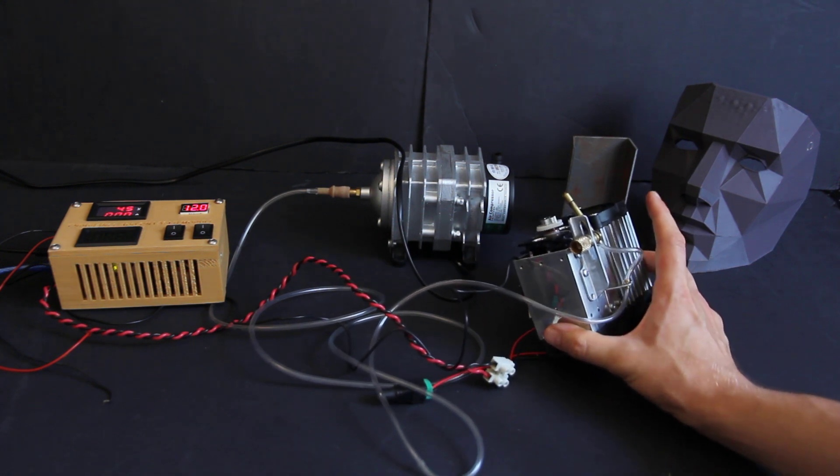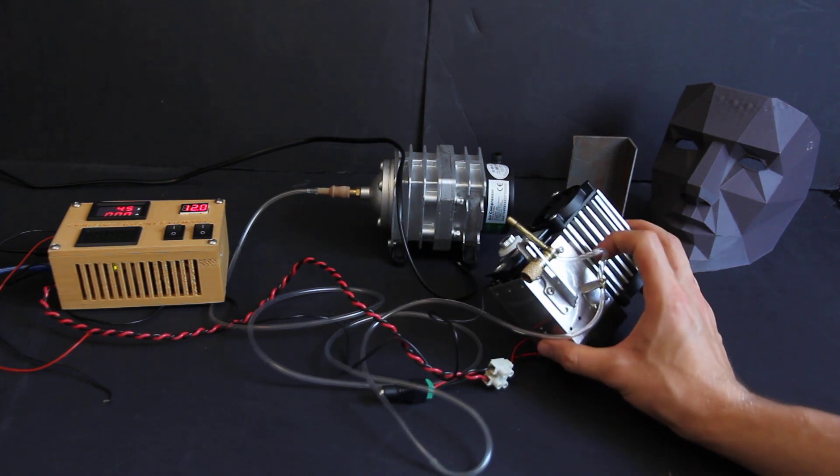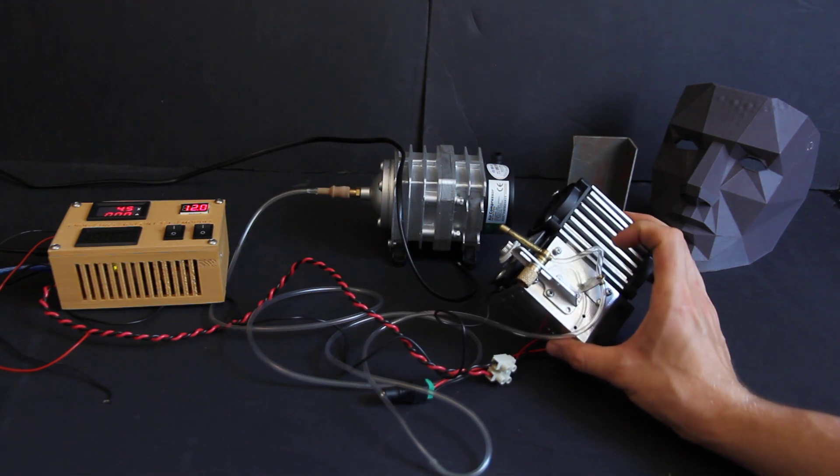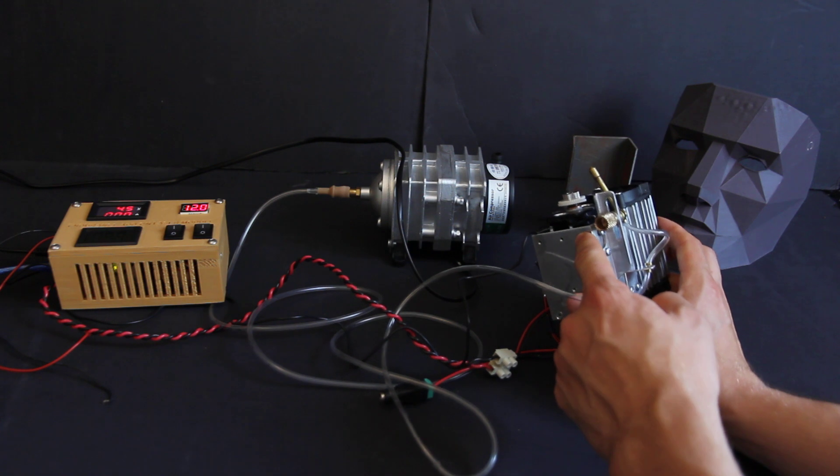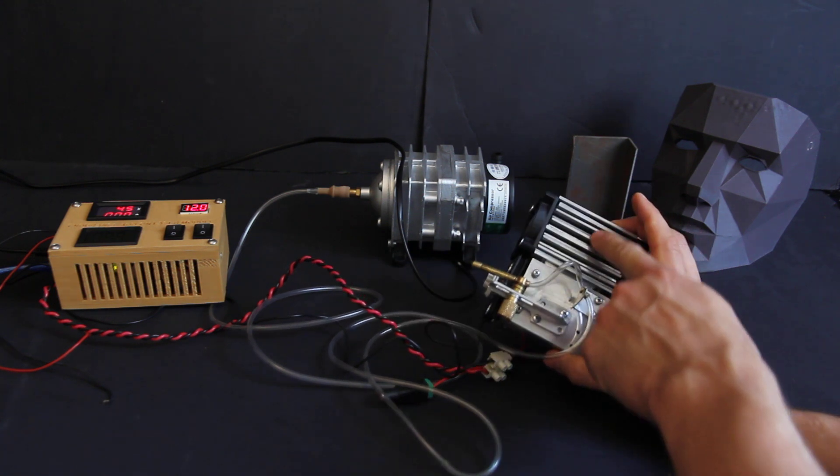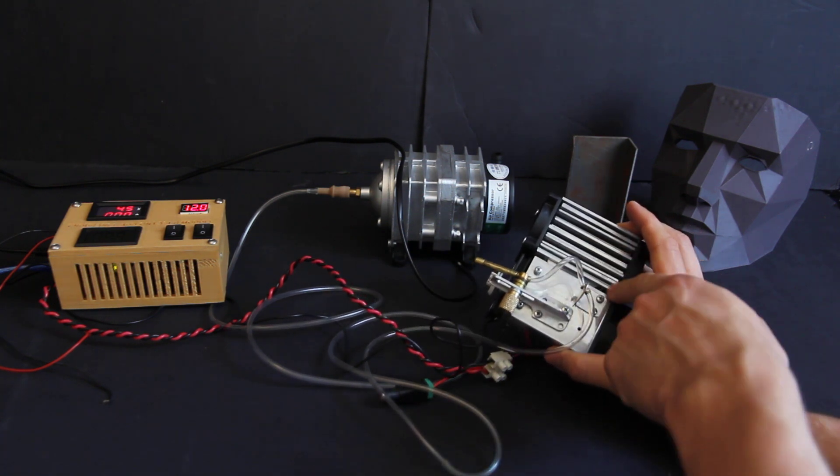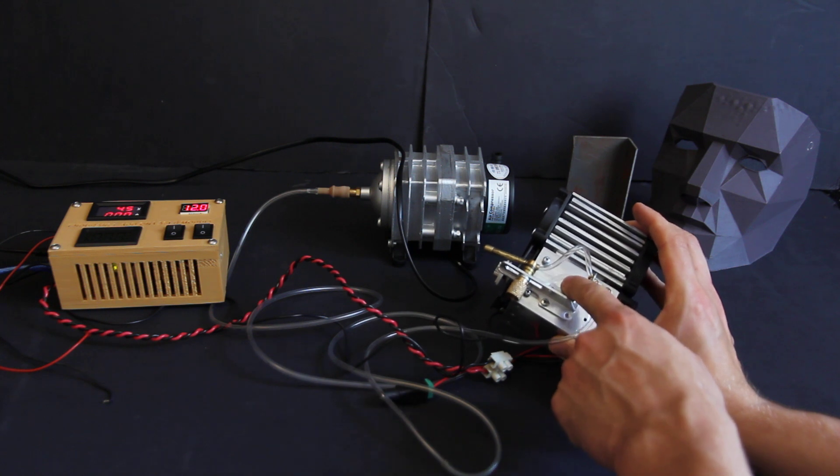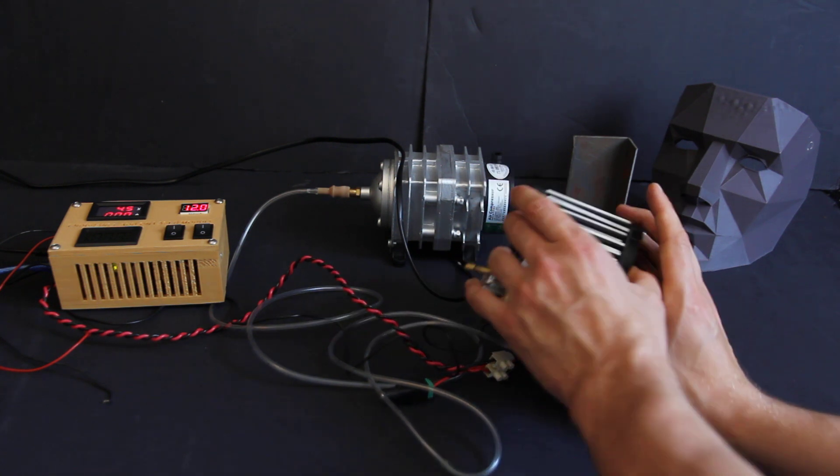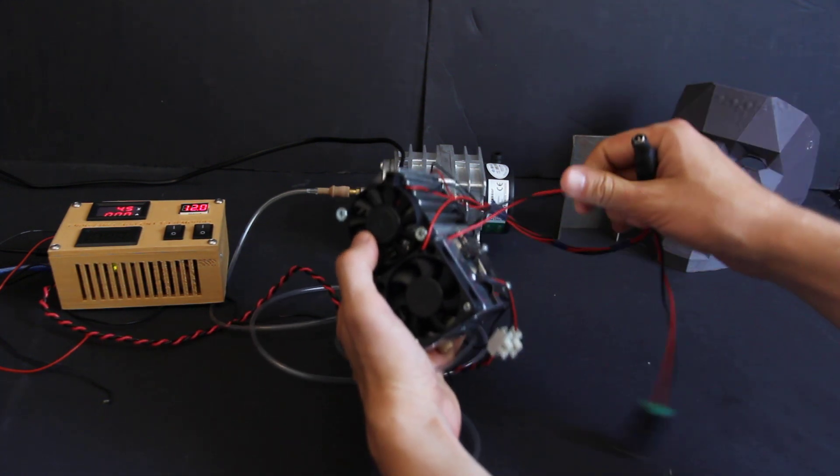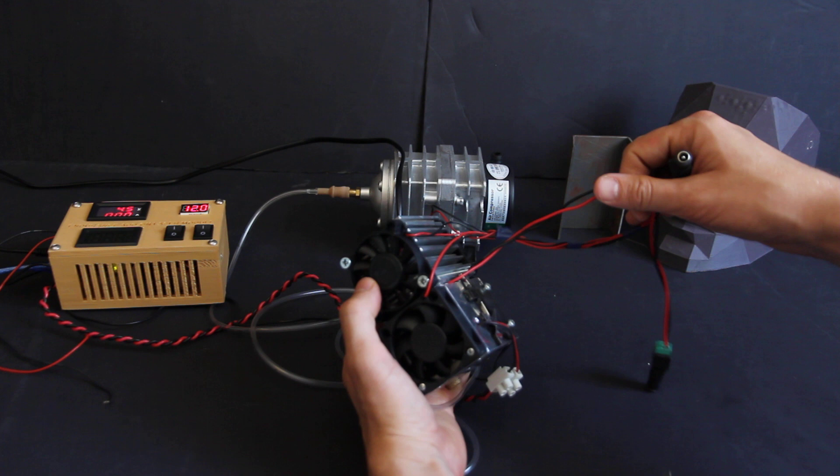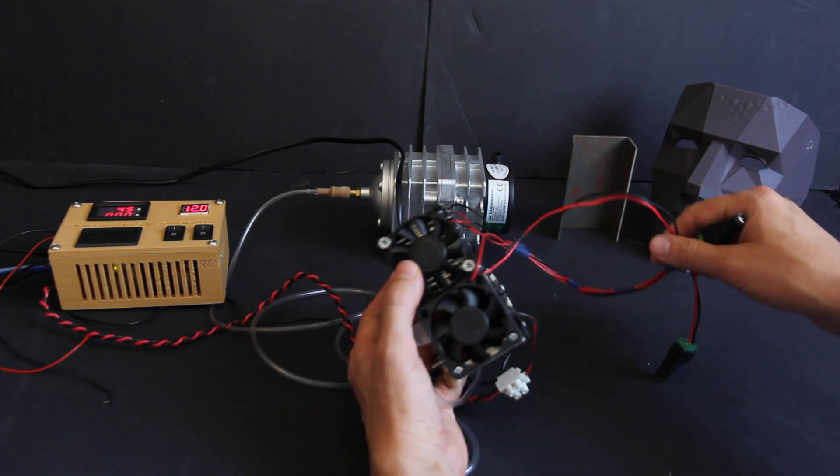The second improvement is that we have added a TEC cooling system. Now this aluminum housing will be cold, will be much colder, and this is a heat sink that will distribute heat from this housing. We have two fans and right now we have independent power for TEC and for fans because fans also consume power.